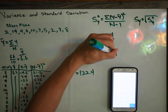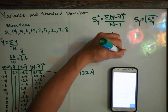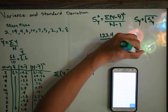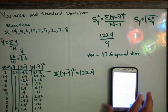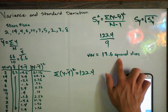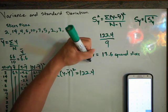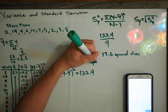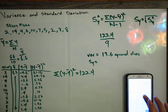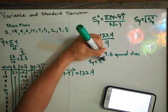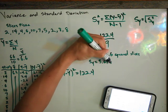And that's measured in square slices of pizza. So the average distance from the mean for this data set is 13.6 squared slices of pizza. But squared slices of pizza don't mean anything to us. So what we need to do is find the standard deviation, which is the square root of 13.6. And that gives us 3.69 slices of pizza.